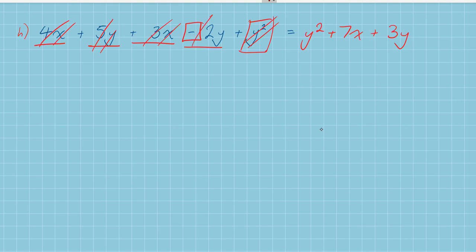And let's have a look. That is all of my terms. So 4X plus 5Y plus 3X minus 2Y plus Y squared simplified is Y squared plus 7X plus 3Y.